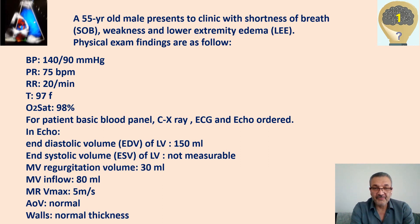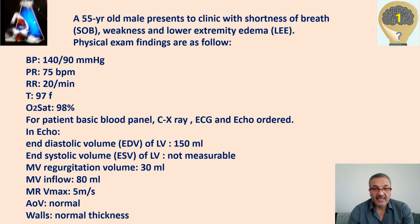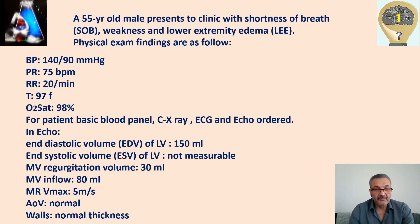For end-systolic volume, due to lack of good acoustic windows, we couldn't trace the endocardium well and we didn't have Definity contrast at that moment, so we couldn't measure end-systolic volume reliably. But we could measure mitral regurgitation volume at about 30 milliliters, and mitral valve inflow by continuity equation was 80 milliliters.